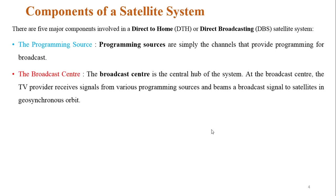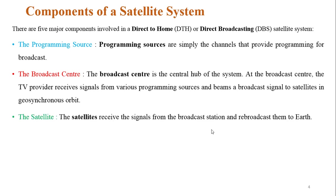The second component is the broadcast center. The broadcast center is a hub where the TV provider receives signals from various programming sources. All the channels send their information to the broadcast center, and that information is transmitted to the satellite. The satellite then receives the signals from the broadcast center and rebroadcasts them back to earth.